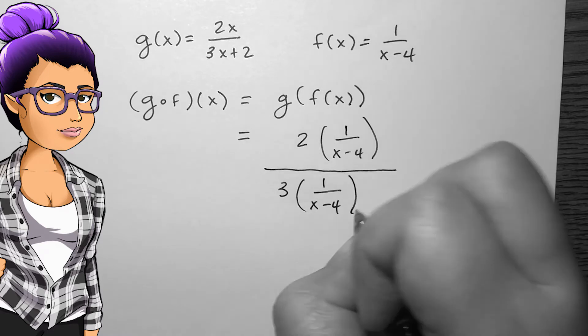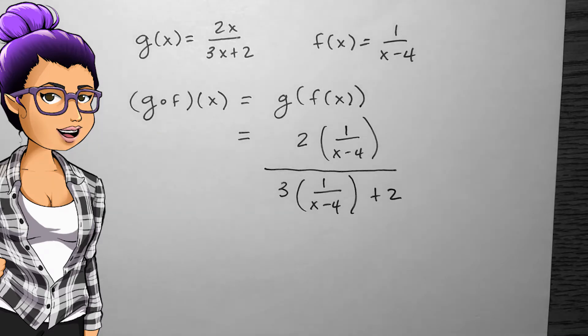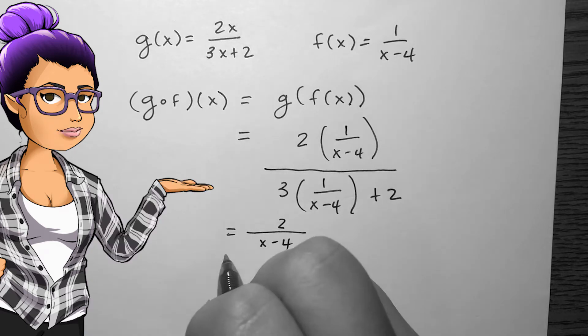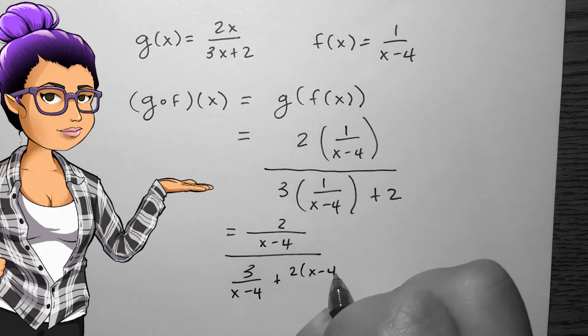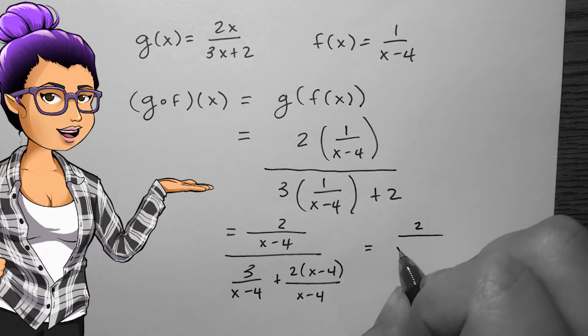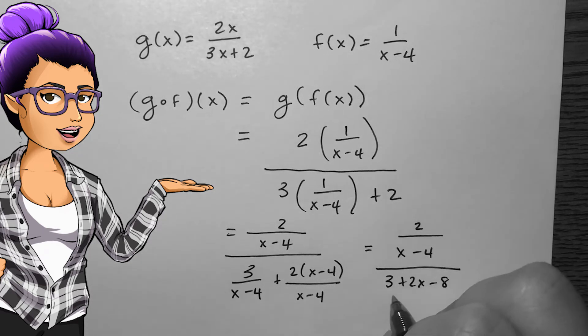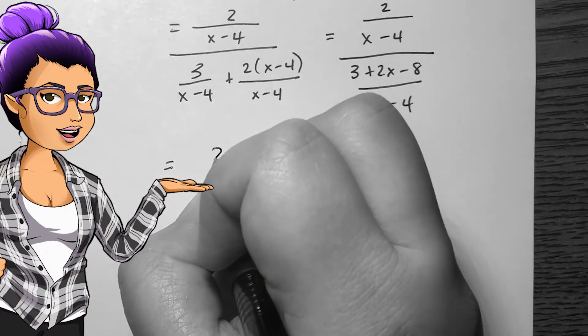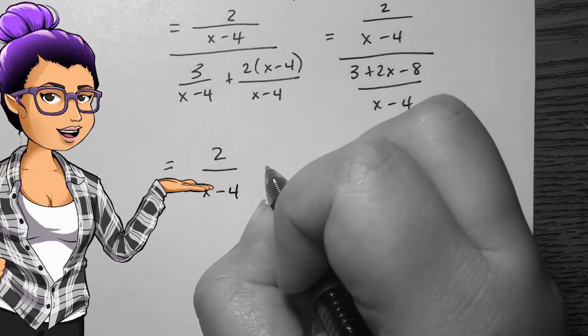If g of x is 2x over 3x plus 2, and f of x is 1 over x minus 4, then in order to find g composed with f evaluated at x, I need to take f of x and plug that into g. This looks rather complicated at first, and I need to find a common denominator at the bottom of the fraction, then divide by a fraction by multiplying by the reciprocal instead. g of f of x will simplify down to 2 over 2x minus 5.